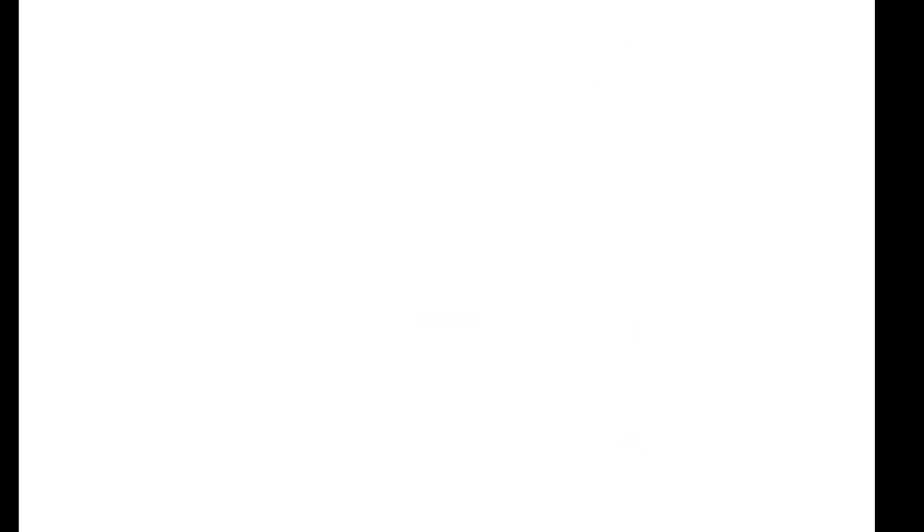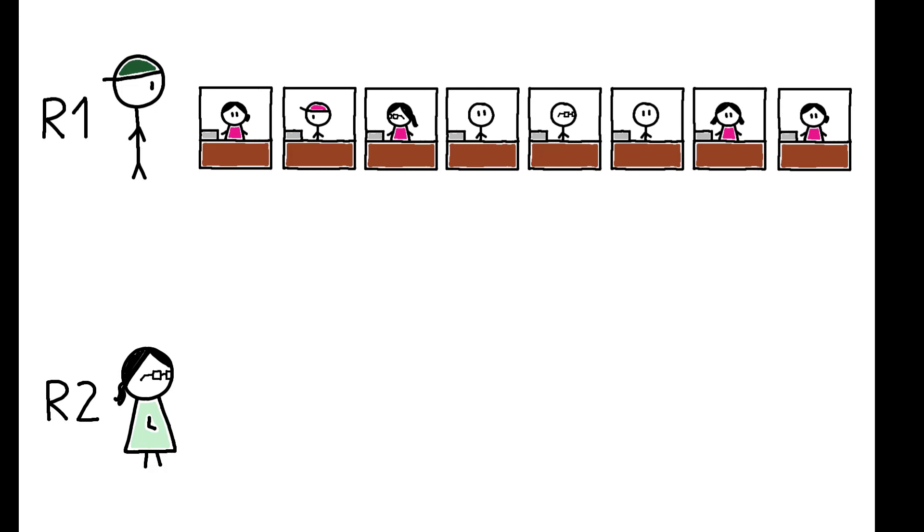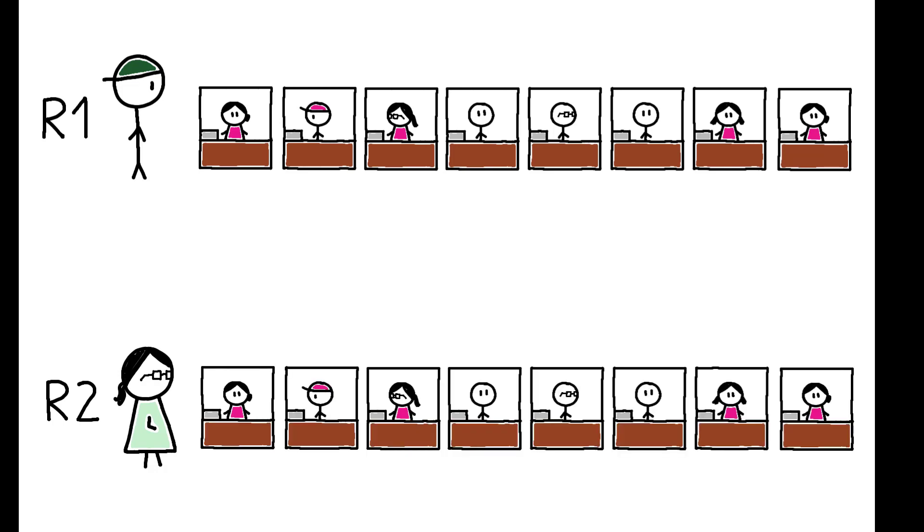To investigate, the authors extended the experiment to include two receivers. R1 watched eight videos and was incentivized to guess whether each was true or false. R2 was then shown the pictures and titles for the same eight videos and chose four of them to watch.